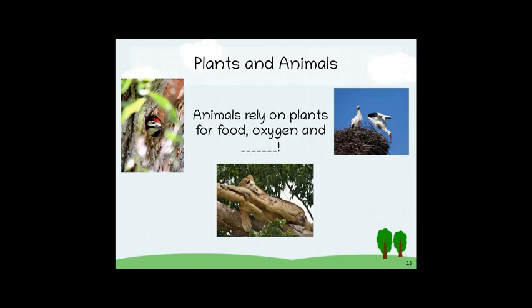What about plants and animals? You know that animals get food and oxygen from plants. Animals also need plants for other things. Birds use twigs and leaves to build nests. Woodpeckers make their homes inside trees or cacti. Lions nap in the cool shade of a tree. Animals rely on plants for food, oxygen, and shelter. Plants need animals too. Plants take in carbon dioxide to make food. The carbon dioxide comes from animals when they breathe out.